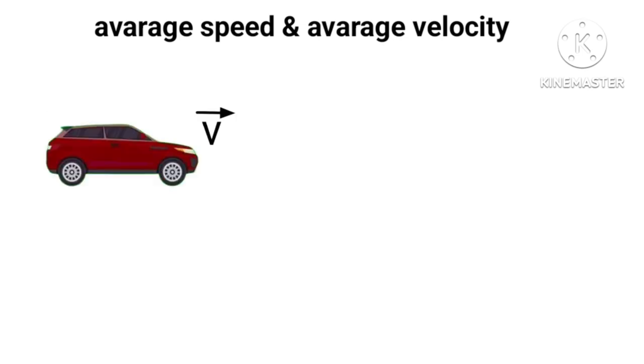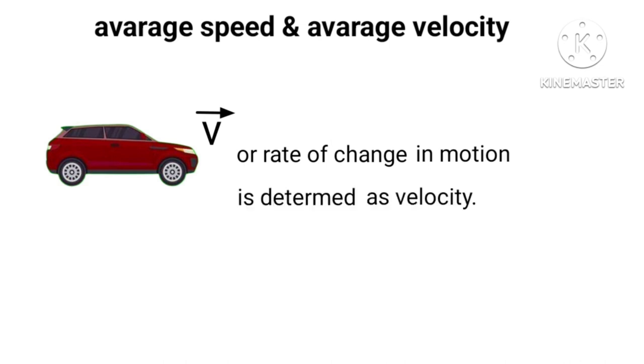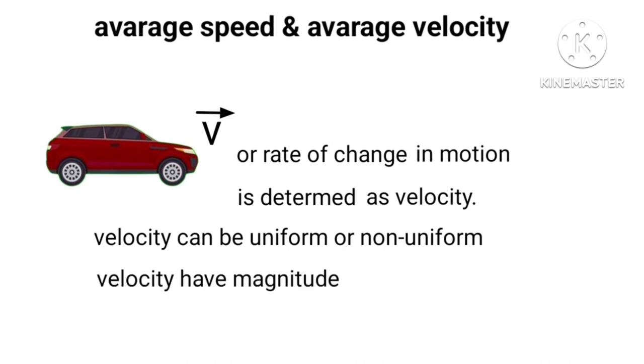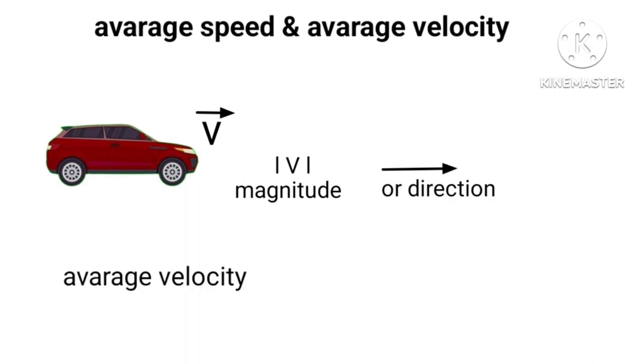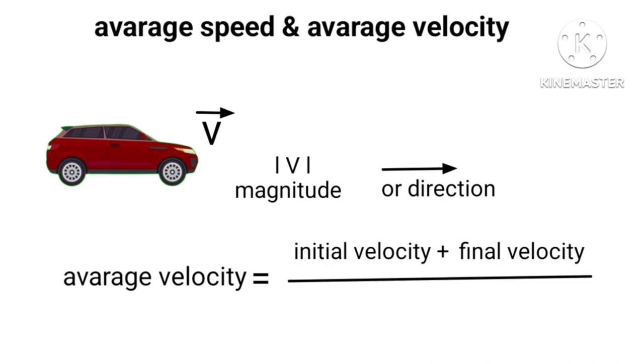Speed with direction or the rate of change in motion of an object can be termed as velocity. The velocity of an object can be uniform or non-uniform. Here velocity have magnitude and direction. Velocity can be changed either by changing magnitude or direction. Hence in case of change in velocity, average velocity equal to sum of initial and final velocity upon T2.